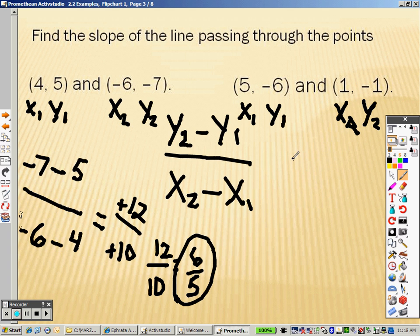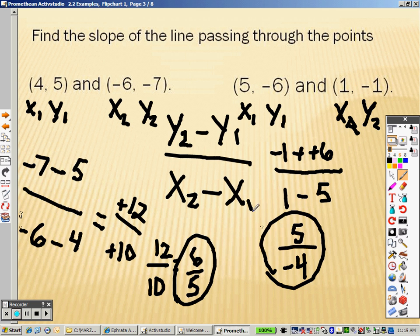Over here with this one, y2 is negative 1 minus y1. And that's why it's minus a negative, because y1 is negative 6, over x2 minus x1. So that's like saying plus a positive. Negative 6 plus, or negative 1 plus 6 is 5. 1 minus 5 is negative 4. So there is your answer.